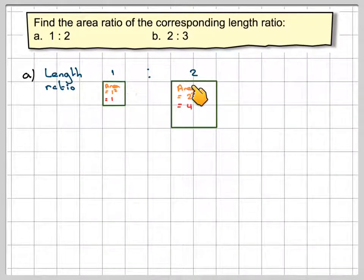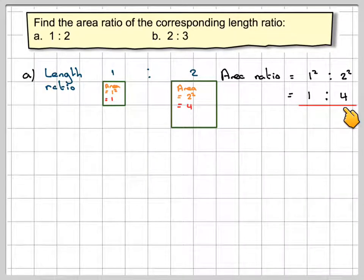You can notice you can get that by doing 1 squared to 2 squared. So the area ratio is 1 squared to 2 squared which is 1 to 4.